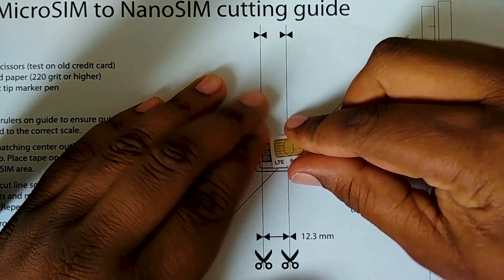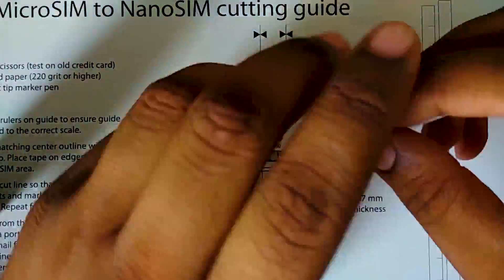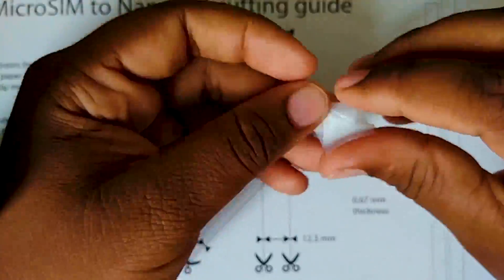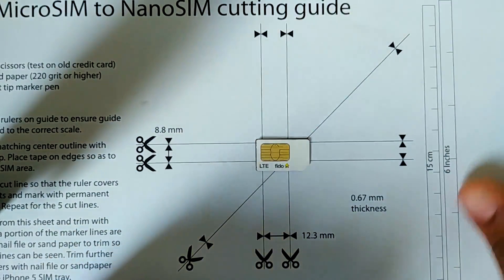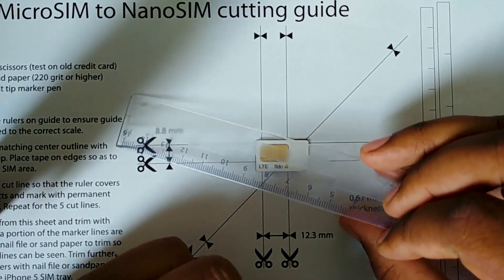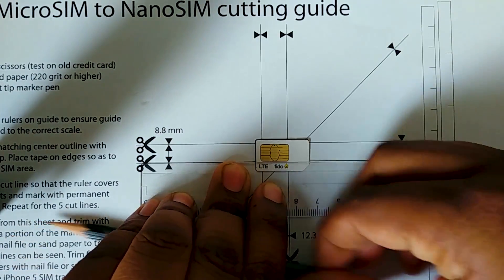Got the SIM right here and we're gonna tape it down. Now what we're gonna do is take our ruler, line it up with the lines, and draw the line.